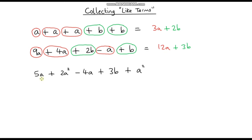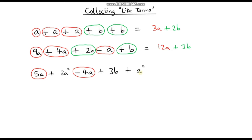Let's do one more example. Starting with the A terms: we've got 5A here, and 2A squared here. Are these like terms? If you watched the previous video, you'd remember they are not — we cannot add an A to an A squared. It's like adding centimetres to centimetres squared; you can't add a length to an area. So 5A and 2A squared are not like terms. We do have a minus 4A, so 5A minus 4A is just 1A, which we write as A.